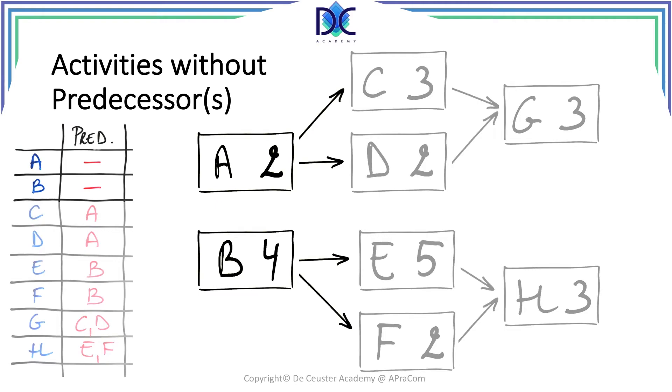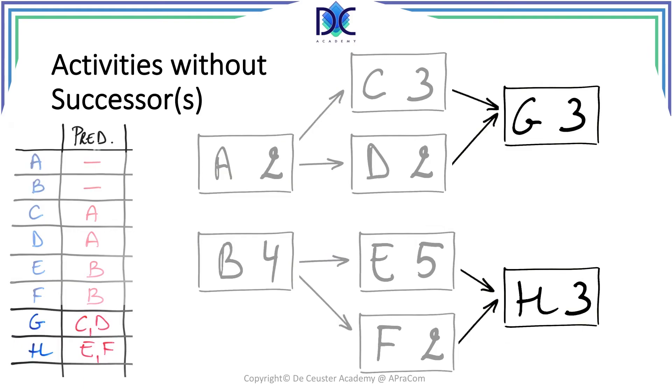Let's start with activities without predecessors. Like I said, A and B have no predecessors, so they are at the beginning of the precedence diagram. The same we do with activities without successors, but now we know that they are at the end of the precedence diagram. So we already know the start of the network and the end.